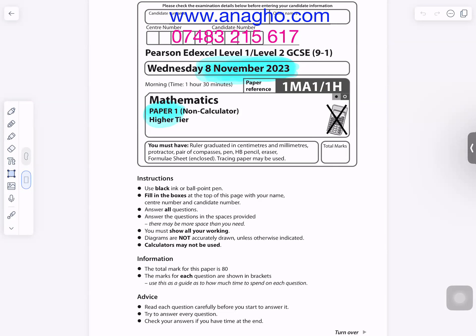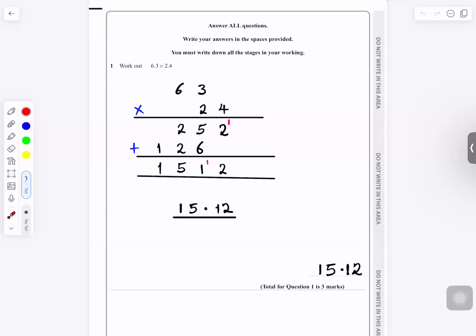November 2023, paper 1, higher tier. Question number 1: work out 6.3 times 2.4.